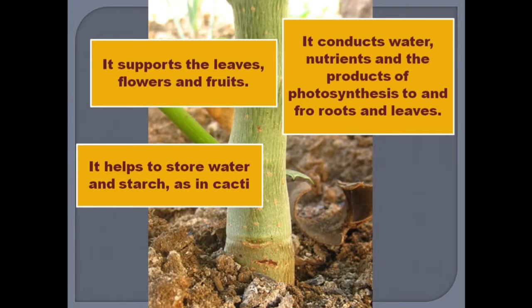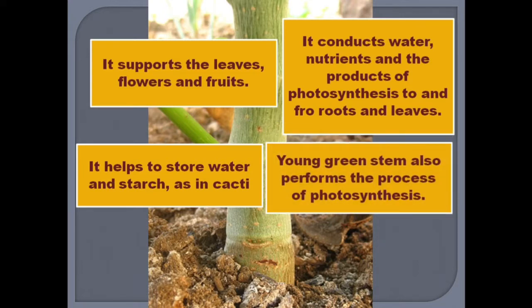The trunk of sago palm, sweet palm, etc. stores a large amount of starch. In sago palm, this starch is used in sabudana. Young stems also perform a minor role in food production — when a stem is green and small, just emerged from a seed, it is also performing photosynthesis. But in some species, like cactus, the stem is the most important organ.